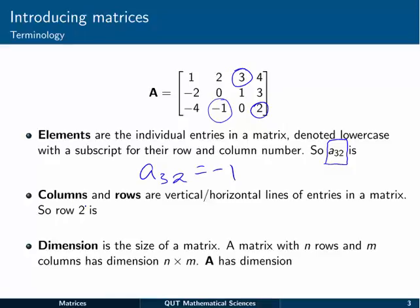Columns and rows, like we saw, are vertical or horizontal lines of entries in a matrix. So row number 2, we can see up here, is minus 2, 0, 1, and 3. Sometimes we write that as a vector, and sometimes still we might write that as A2. We could also find that the fourth column of A would be 4, 3, 2, and so on.